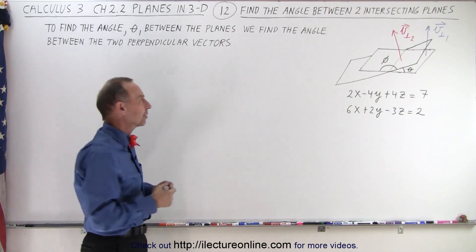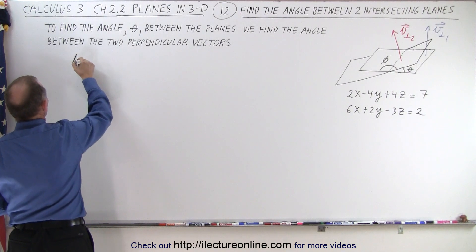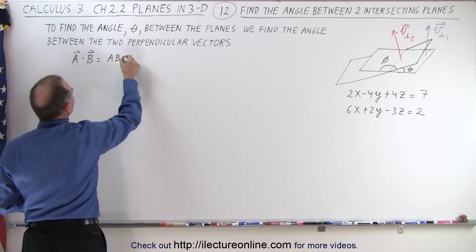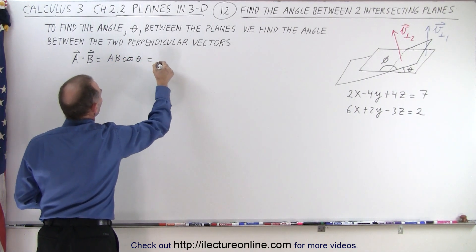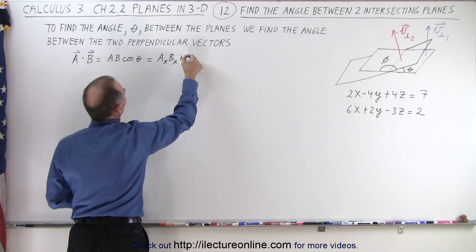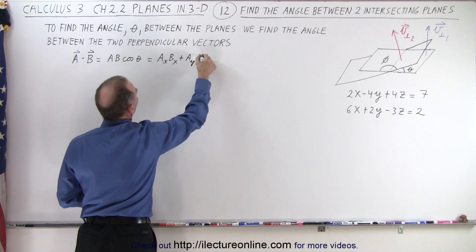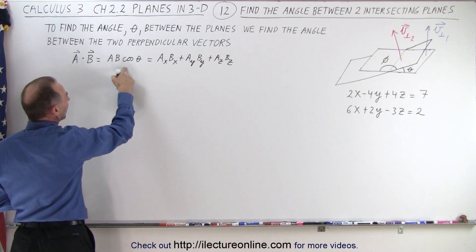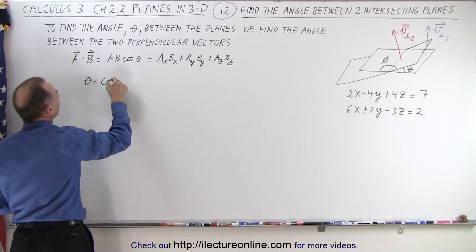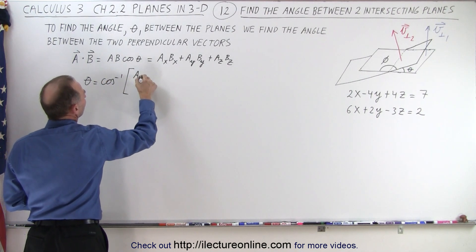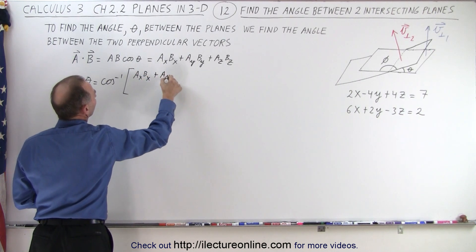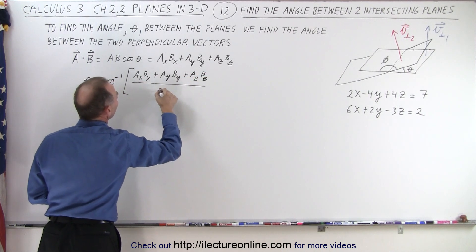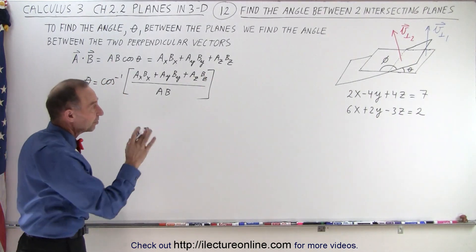And we can do that by using the dot product. Remember that if we take the dot product between two vectors, let's say A and B, that is equal to the magnitude of A times the magnitude of B times the cosine of the angle between them. And it's also equal to the product of the X components, plus the product of the Y components, plus the product of the Z components. So we can then solve this for theta. We can say that theta is equal to the inverse cosine of AₓBₓ plus AᵧBᵧ plus AᵤBᵤ, all divided by the magnitude of A and B multiplied together.